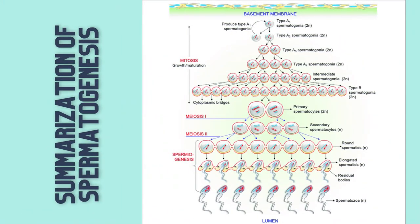This figure illustrates the complete process of spermatogenesis. In the proliferation phase, spermatogonia A1 undergoes mitotic division to become A2, then A3, continuing until spermatogonia B is formed. After the proliferation phase comes the meiotic phase, in which primary spermatocytes become secondary spermatocytes through meiosis I. Secondary spermatocytes then undergo meiosis II and become spermatids in the differentiation phase, after which spermatids become spermatozoa.